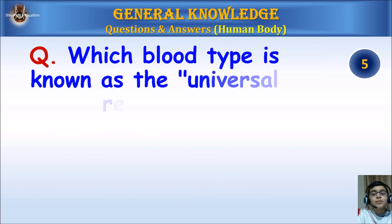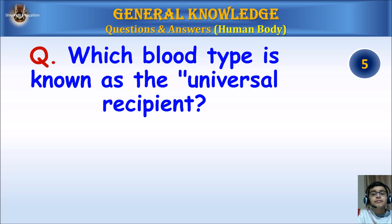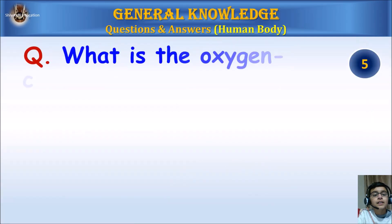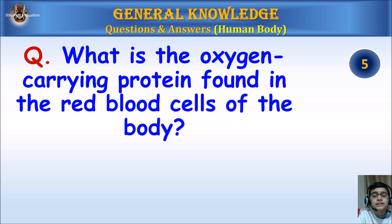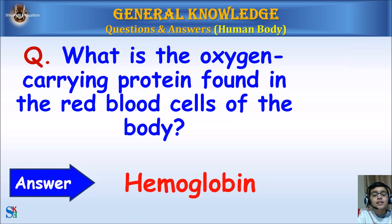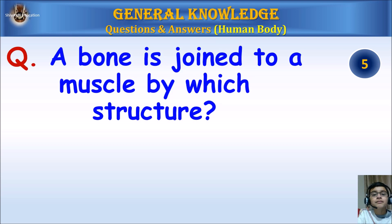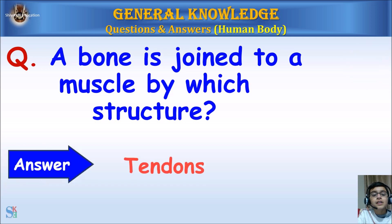Which blood type is known as the universal recipient? What is the oxygen-carrying protein found in the red blood cells of the body? Answer: Hemoglobin. A bone is joined to a muscle by which structure? Answer: Tendons.